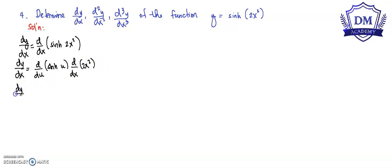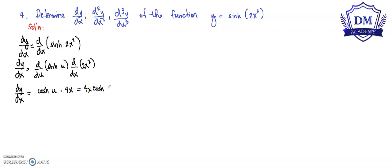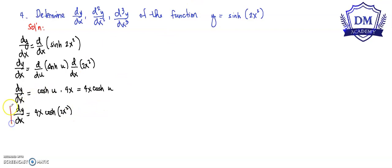So we have now: the derivative of the hyperbolic sine is hyperbolic cosine u, then multiplied by the derivative of 2x squared, which is 4x. And this is equal to 4x hyperbolic cosine of u. So dy over dx is equal to 4x hyperbolic cosine of 2x squared. This is the first derivative.